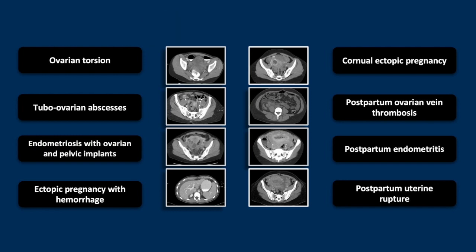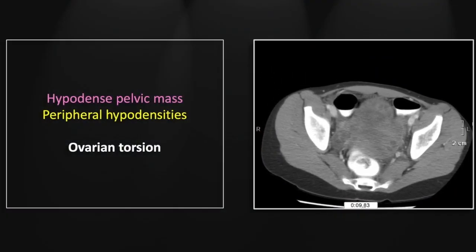Our first case is of an ovarian torsion in a young girl. Note the hypodense and massively enlarged ovary, presenting as a pelvic mass, with these characteristic peripheral hypodensities consistent with peripheralized ovarian follicles — the definitive diagnostic finding in ovarian torsion.